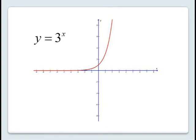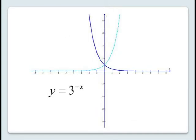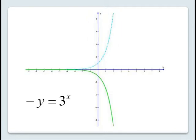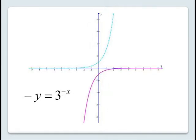Our next example uses an exponential graph. The equation y equals 3 to the x is shown here with its graph. For y equals 3 to the minus x, we've replaced x with minus x, so this results in a reflection about the y-axis, shown here in dark blue. For minus y equals 3 to the x, we've replaced y with minus y, causing a reflection across the x-axis, shown here in green. And finally, for minus y equals 3 to the minus x, we've replaced both x by minus x and y by minus y, so the original graph is mirrored across both axes. It does not matter which one you do first. The result is the graph shown here in purple.